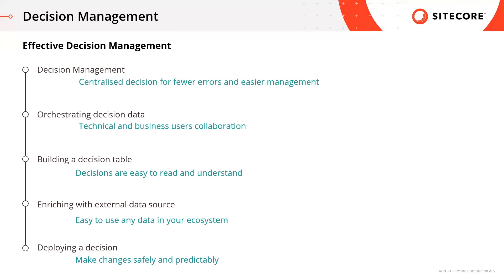We've just seen how we can make changes to decisions safely and predictably directly in the tool. This helps make sure your customers are having a great, consistent experience regardless of how they interact with your business. Today we had a closer look at managing decisions effectively — the importance of managing decisions centrally to minimize inconsistency across channels, how business and technical users can collaborate to orchestrate data and understand rules, and how we can enrich a decision model with fast-moving risk data. The same principles apply to any data in your tech ecosystem. And finally, we saw how we can deploy this change safely and predictably.